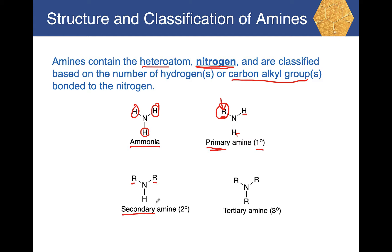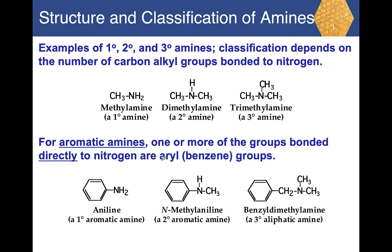If there are two alkyl carbon-containing groups bonded to the nitrogen, it's a secondary amine (2°). And if there are three alkyl groups bonded to the nitrogen, that amine is classified as a tertiary amine (3°). For example, a CH₃ bonded to nitrogen with two hydrogens is a primary amine.